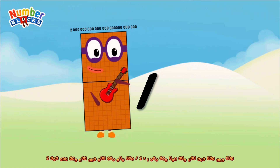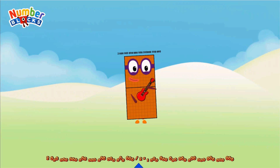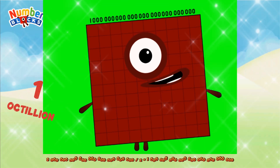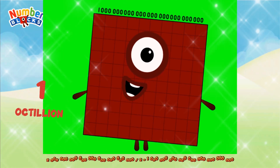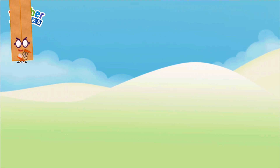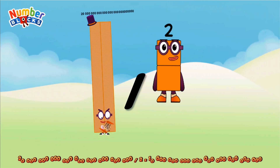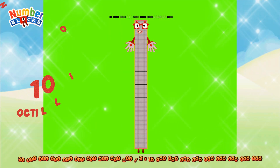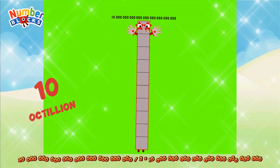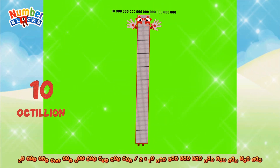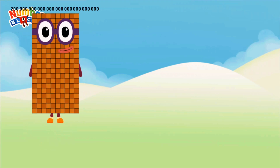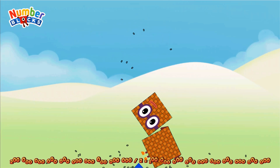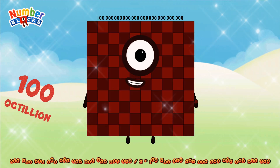Two sextillion divided by two equals one sextillion. Twenty sextillion divided by two equals one sextillion. Two sextillion divided by two equals one sextillion.